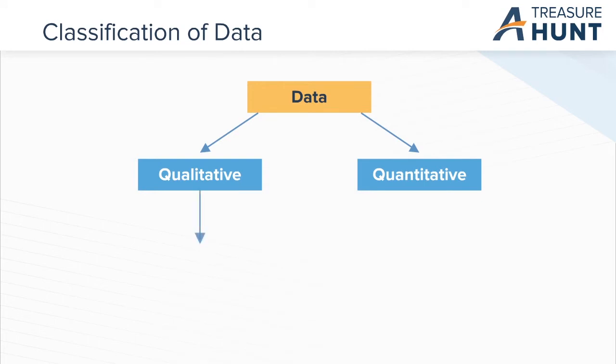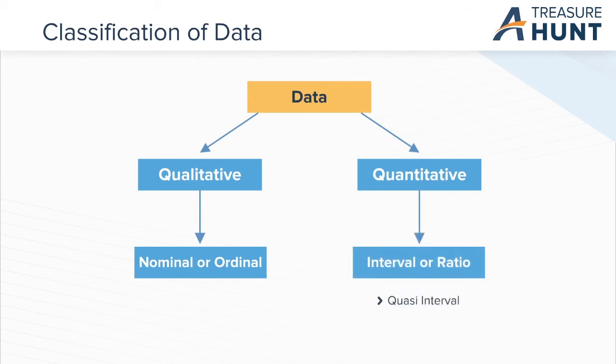Qualitative data includes nominal or ordinal data, whereas quantitative data includes interval or ratio data. Quasi-interval data presents a special case.